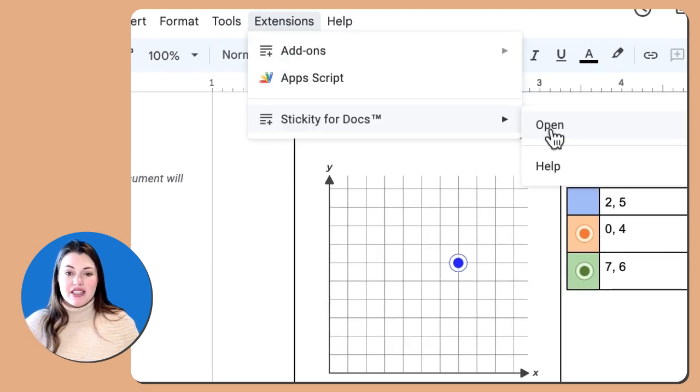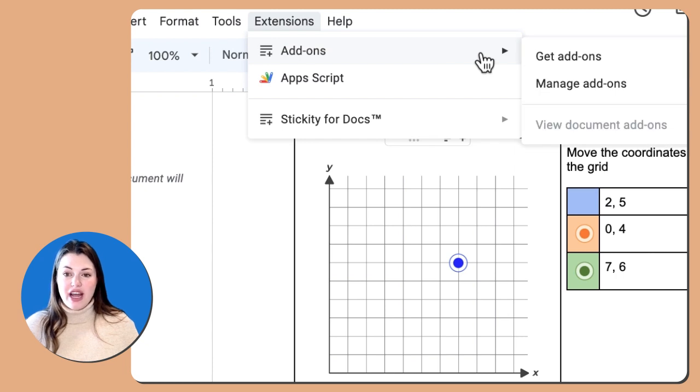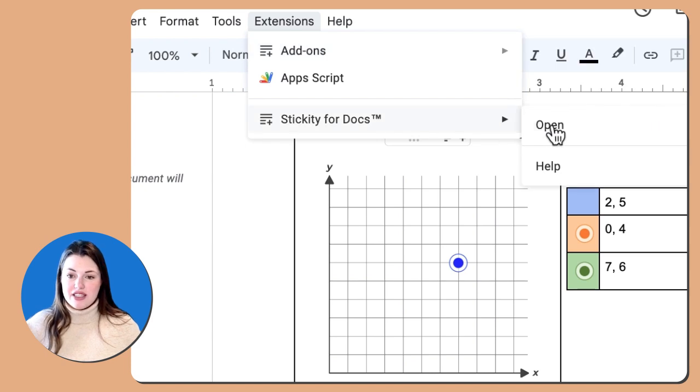The way that you're going to open up Stickity in Docs is to go to extensions, Stickity for Docs, and open. Some of you may already have this installed by your district or by your school, or you've installed it already, so that's how you would open it. If you don't see Stickity for Docs here, all you have to do is go to add-ons and get add-ons, and you can install it. You just search Stickity and install it from there. Your email address is attached to a Pro account, so it will automatically open with all of your access to your Pro stickers.